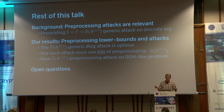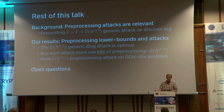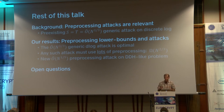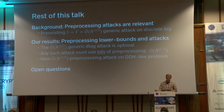Here's the plan for the rest of the talk. First, I want to use an existing preprocessing attack to convince you these attacks are relevant and interesting. This is an attack that achieves cube-root-of-n complexity and works for any group — so it's a generic attack. Then I'll get into our results on preprocessing lower bounds, showing that this cube-root-of-n attack is actually optimal for generic algorithms and any such attack has to use a really large amount of preprocessing. Finally, I'll talk about a new attack on a DDH-like problem and some related points.